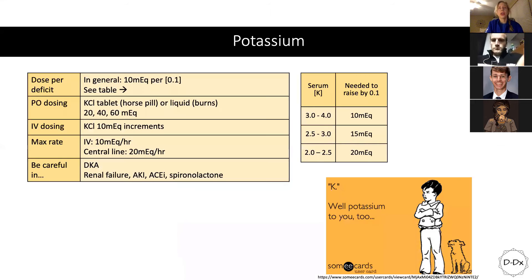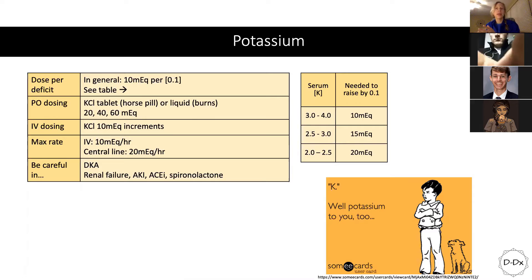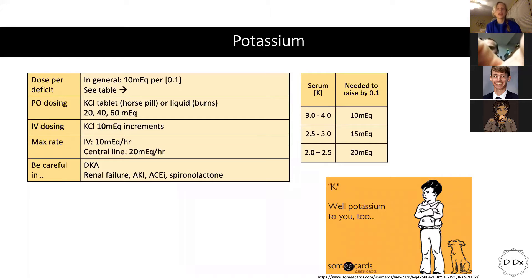Starting off with potassium: in general, the dose per deficit is 10 mEq per 0.1 concentration off in your serum potassium. I have a table to the side — it gets a little more complicated if you're below 3.0, because your total body deficit is quite low and you need a bit more. But in general, 10 mEq per 0.1 is a safe assumption; then go from there and monitor the patient.